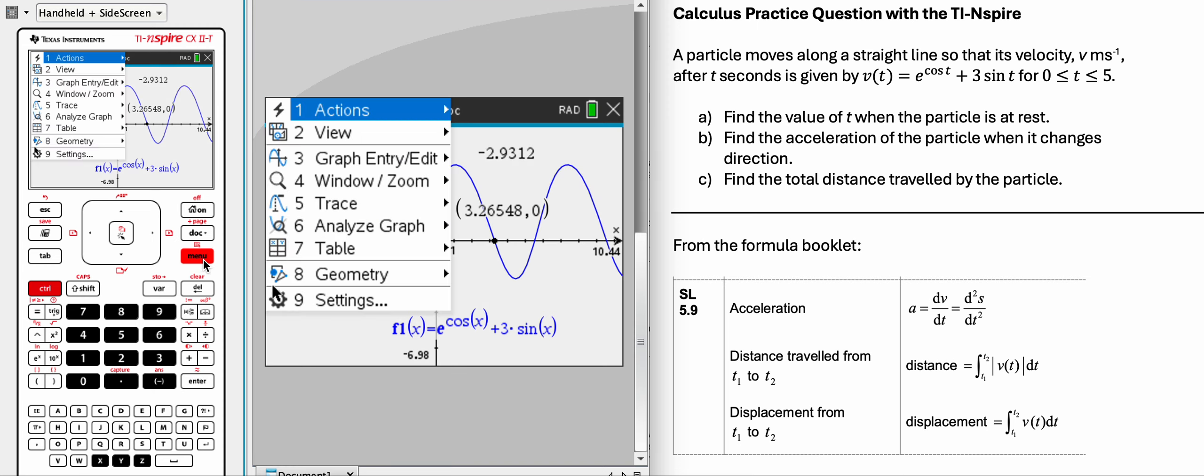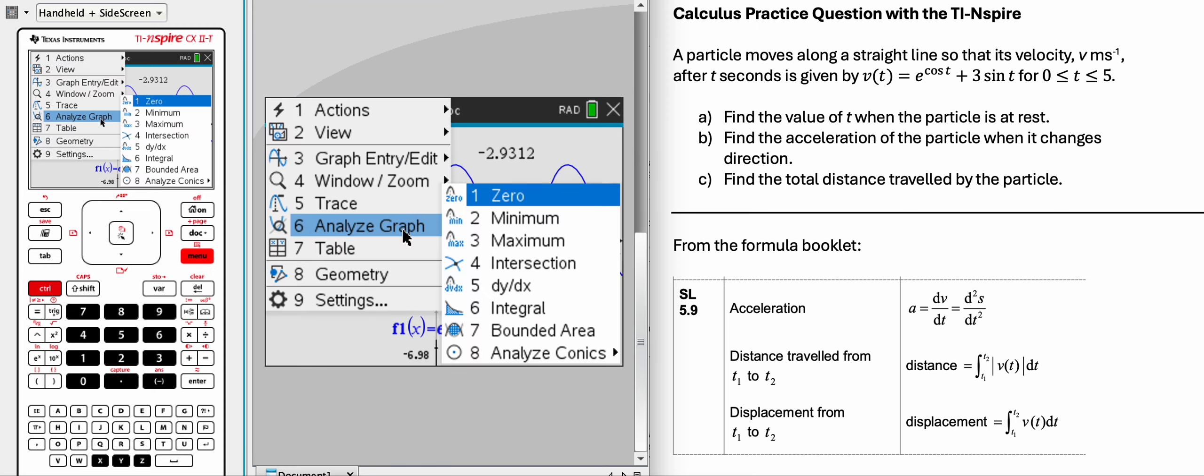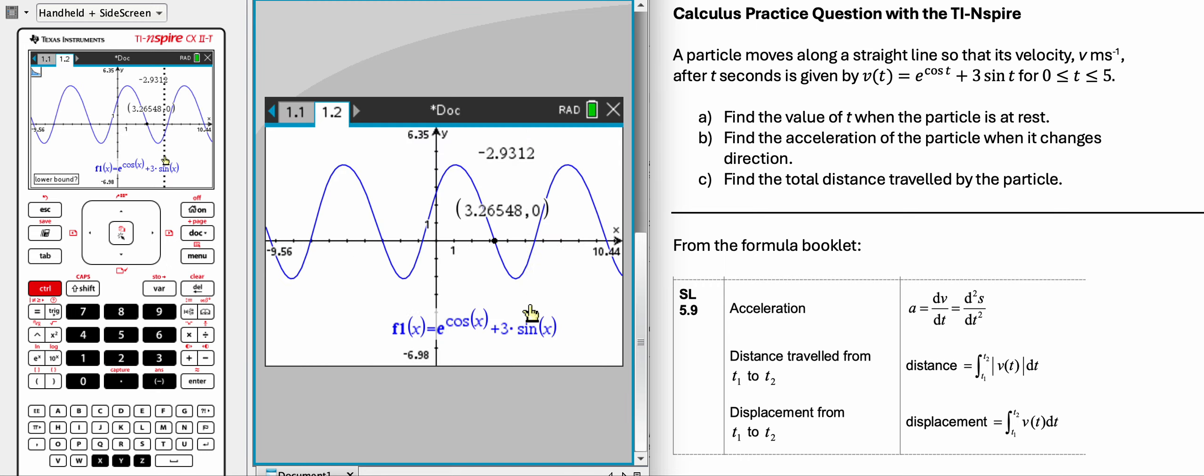So notice that if you wanted to, you could have done the integral from 0 all the way to 5. And it's giving us this number.